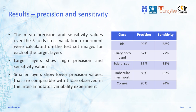We have also performed a target-specific network performance analysis, considering the mean precision and sensitivity pixel-wise classification values on the test set over the five-fold cross-validation experiment. Larger target layers show good precision and sensitivity values. The precision at classifying the scleral spur and the ciliary body band are much lower, but comparable to those observed in the inter-annotator variability pilot experiment.